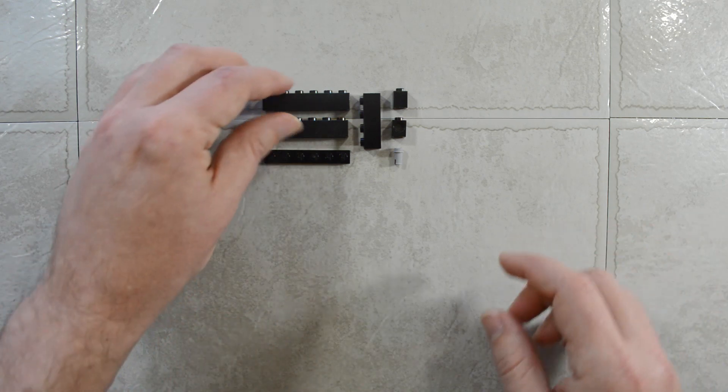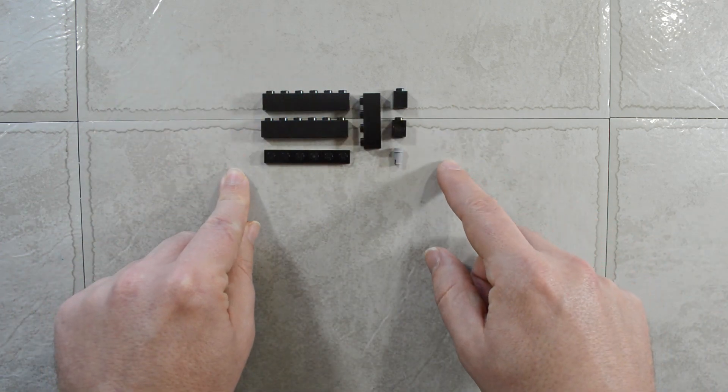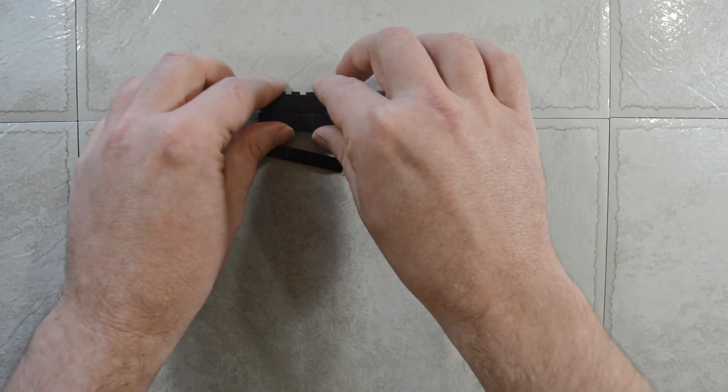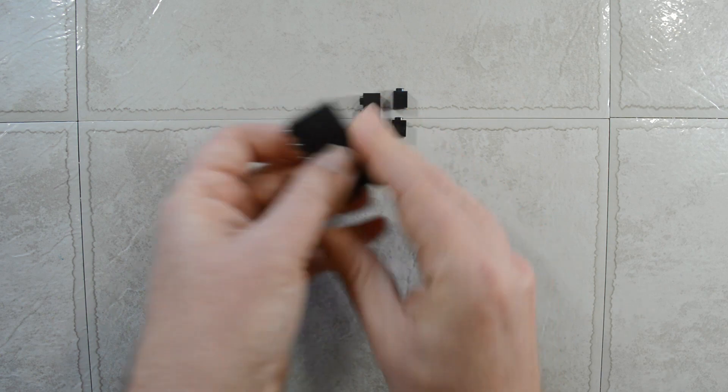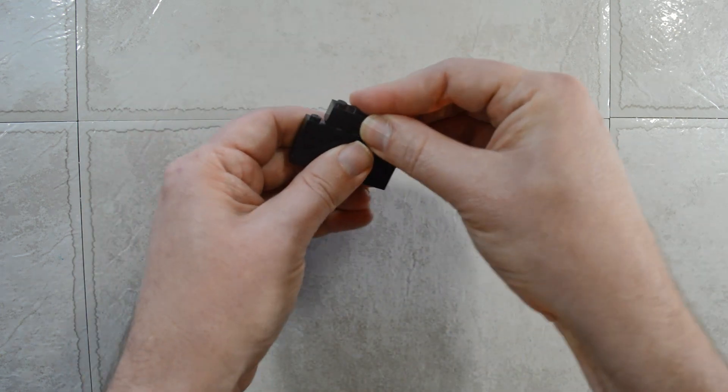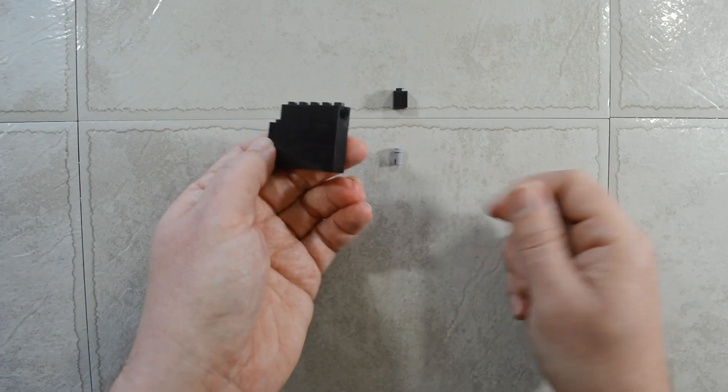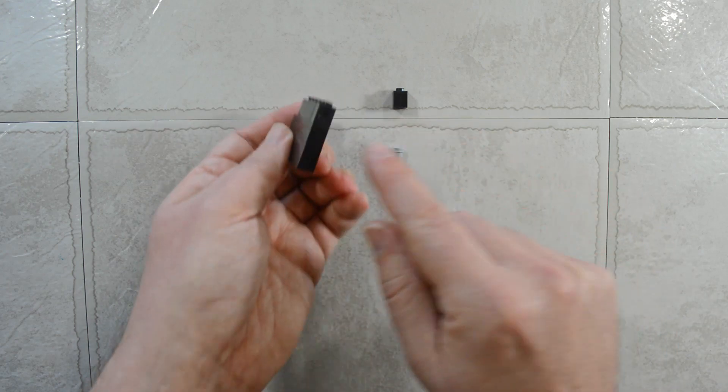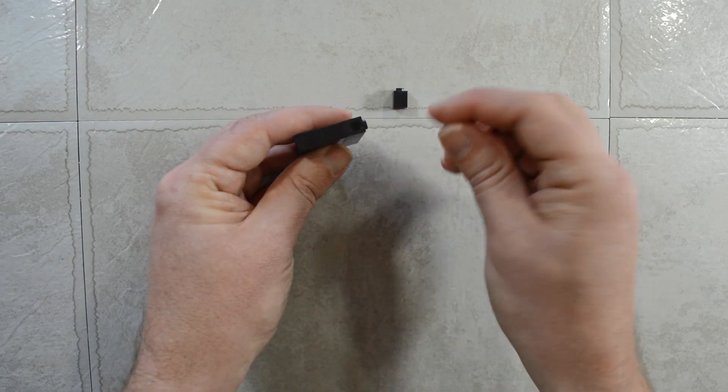So first of all I want to go through building just one element of this design. And this is a fairly simple block to build. So we're just taking 1x bricks, we add a Technic brick with a single hole,